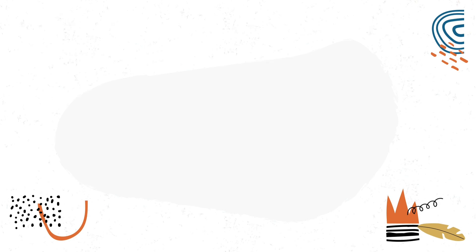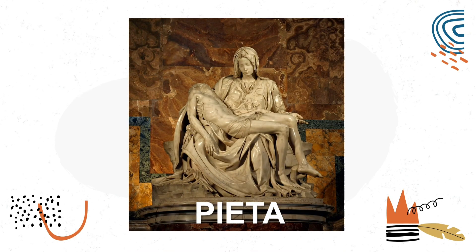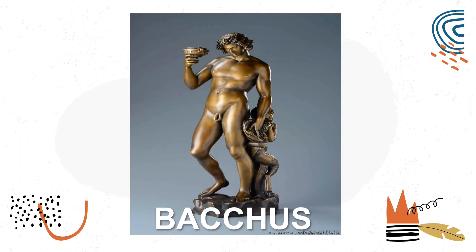Here are some of Michelangelo's famous sculptures. First is Pieta, made out of Carrara marble. We can see Mary contemplating the dead body of her son which she holds on her lap — this represents pity or compassion. The second one is Bacchus, the Roman god of agriculture, wine, and fertility, equivalent to the Greek god Dionysus. A faun — half-human and half-goat — is sitting behind him eating a bunch of grapes.